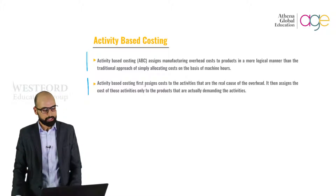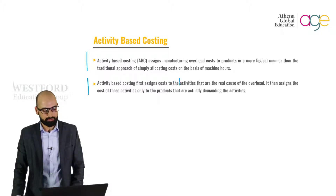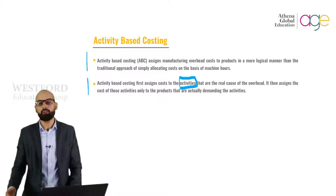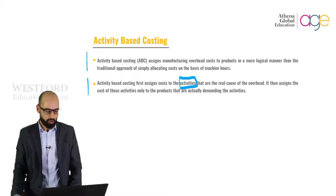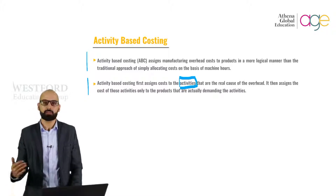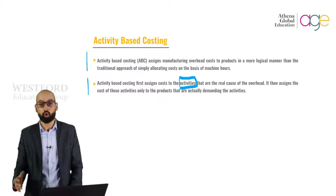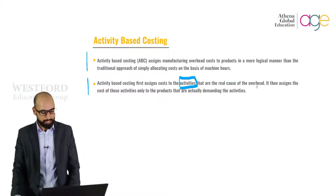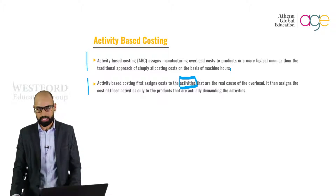The first thing in activity-based costing is assigning costs to certain activities. An activity is any event, unit of work, or task with a specific goal — such as setting up machines for production, designing products, distributing finished goods, or operating machines. Activities consume overhead resources and are considered cost objectives. Under the ABC system, an activity can be considered as any transaction or event that is a cost driver.